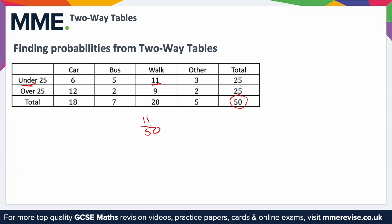We can look at another probability: calculate the probability of this person travelling by bus to work. We don't care whether they're under twenty-five or over twenty-five, so it's again out of fifty. The total number of people who get the bus is seven, so the probability is seven over fifty.